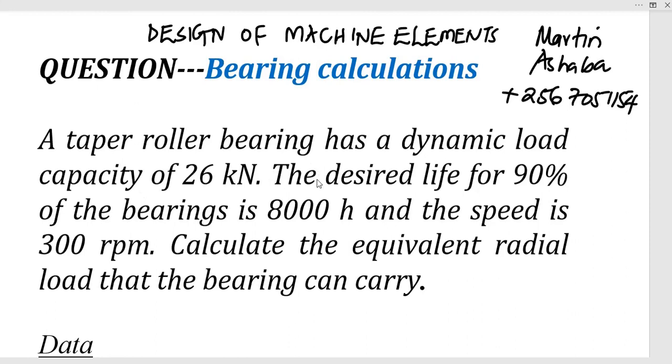A taper roller bearing has a dynamic load capacity of 26 kN. The desired life for 90% of the bearings is 8,000 hours, and the speed is 300 RPM or revolutions per minute. Therefore, calculate the equivalent radial load that the bearing can carry.